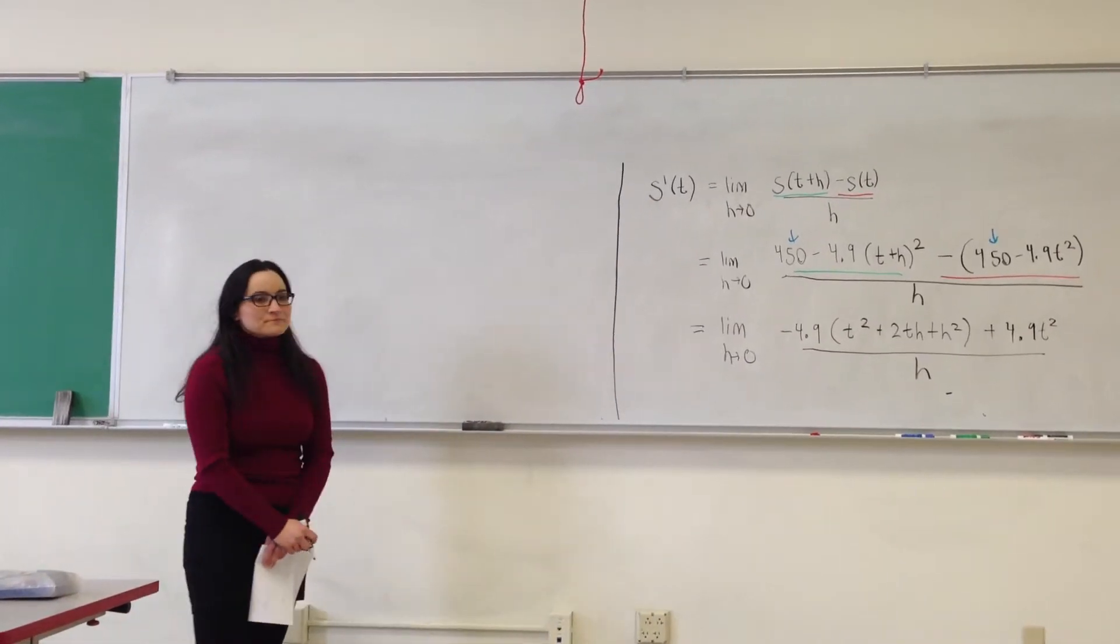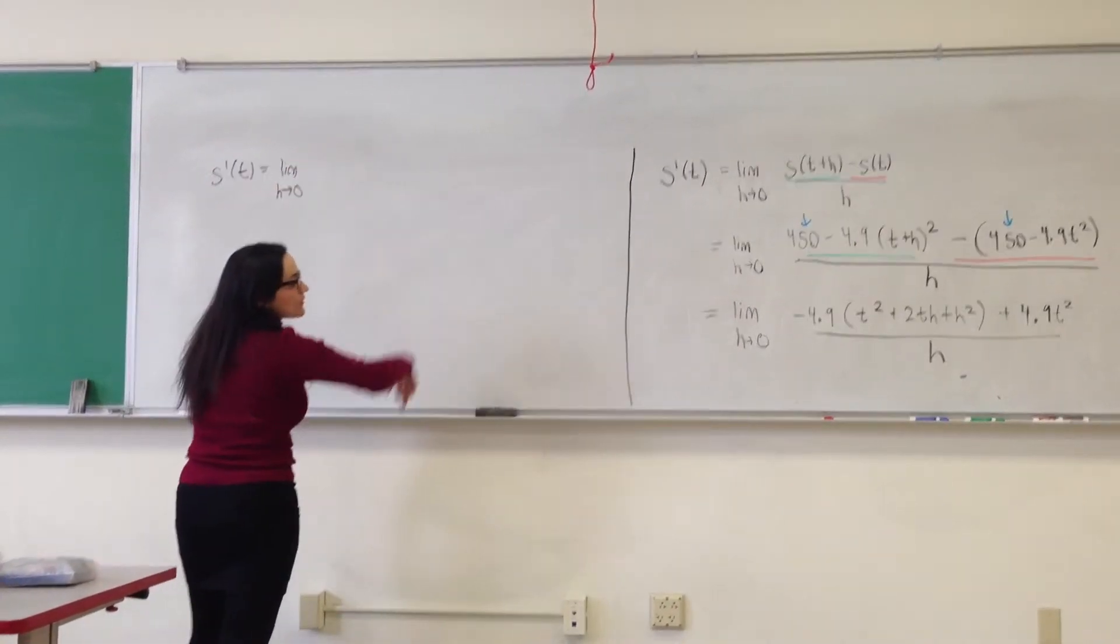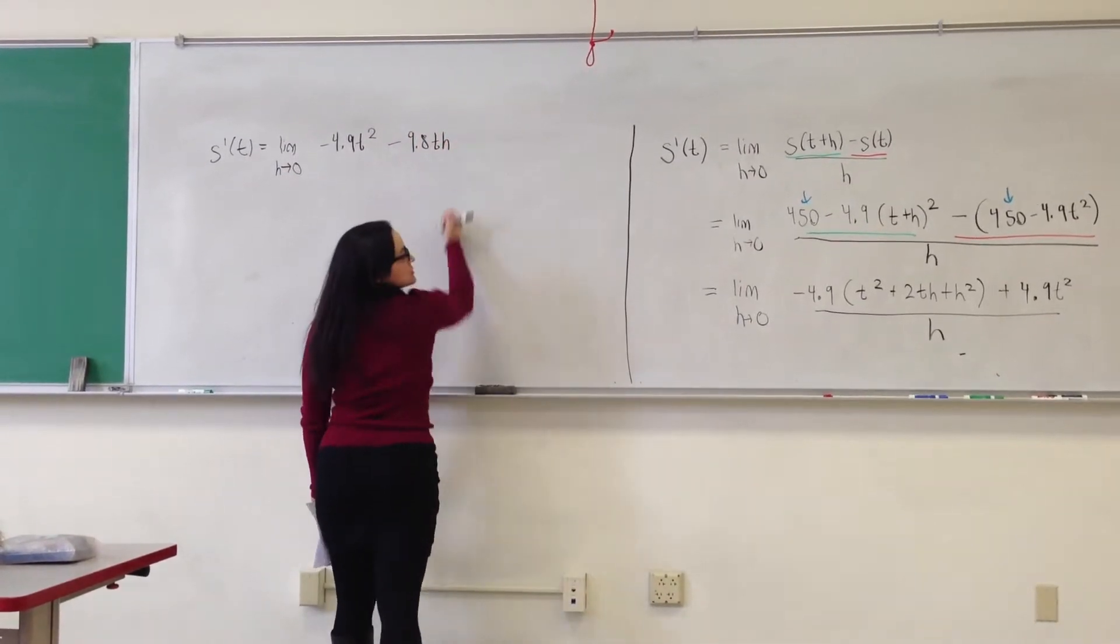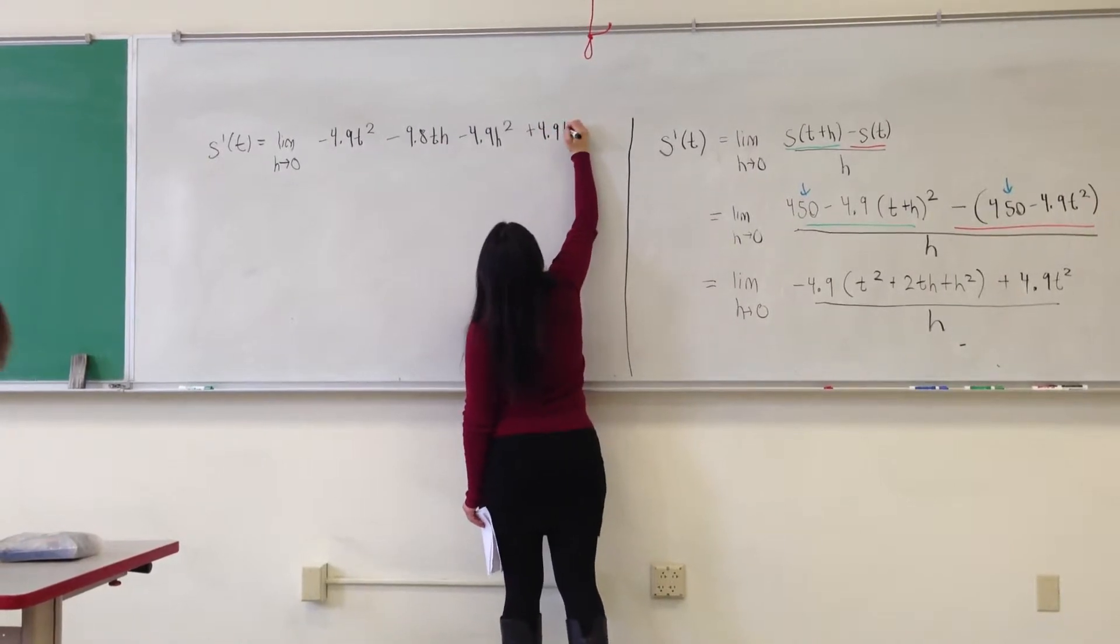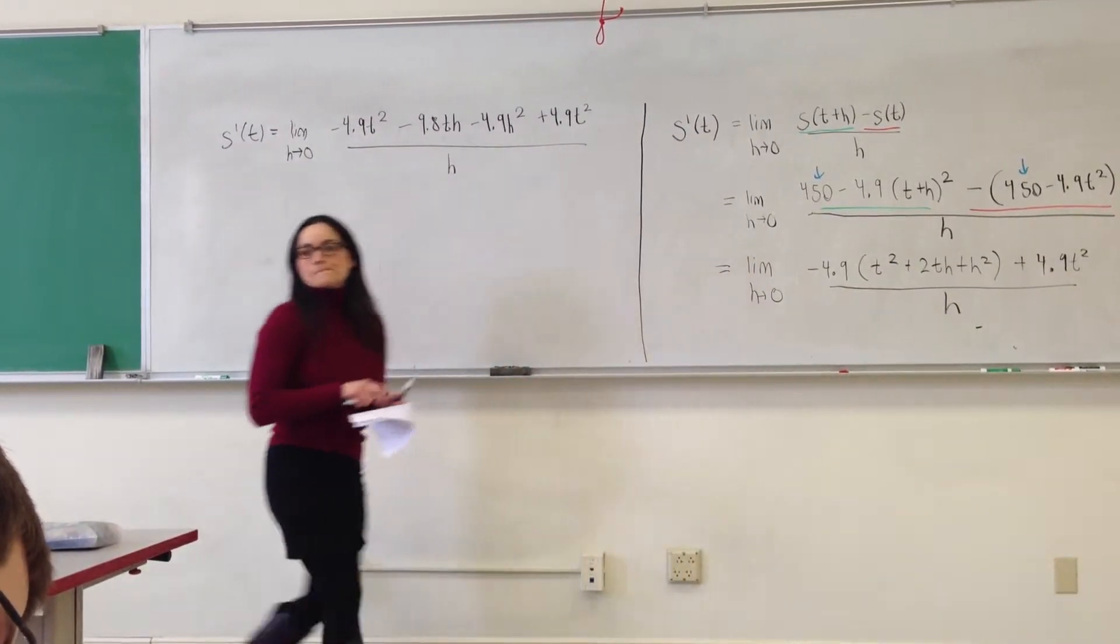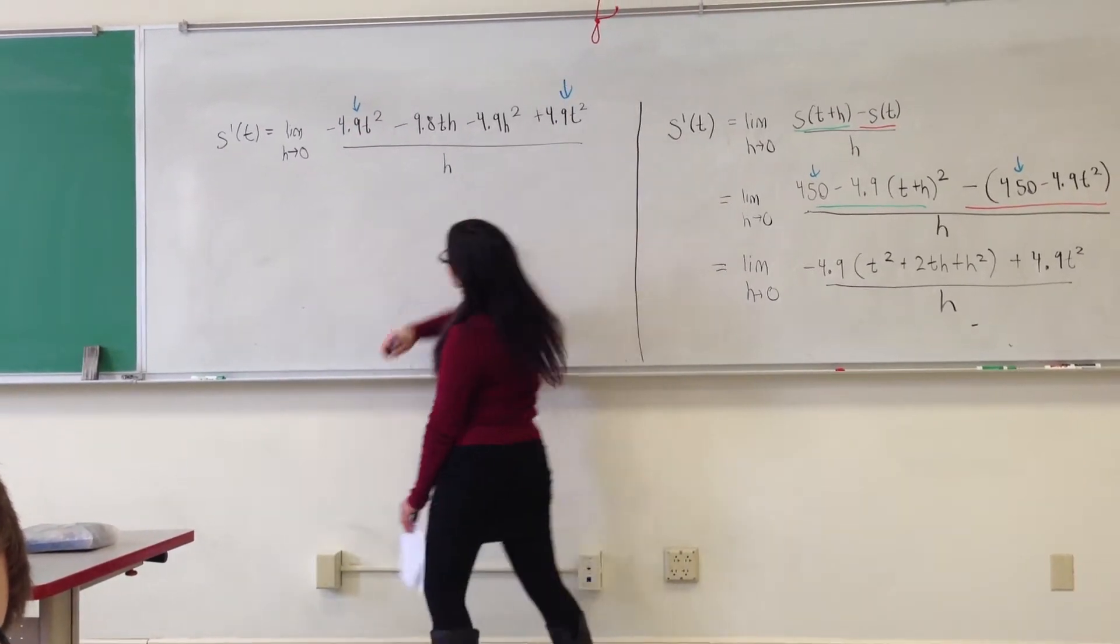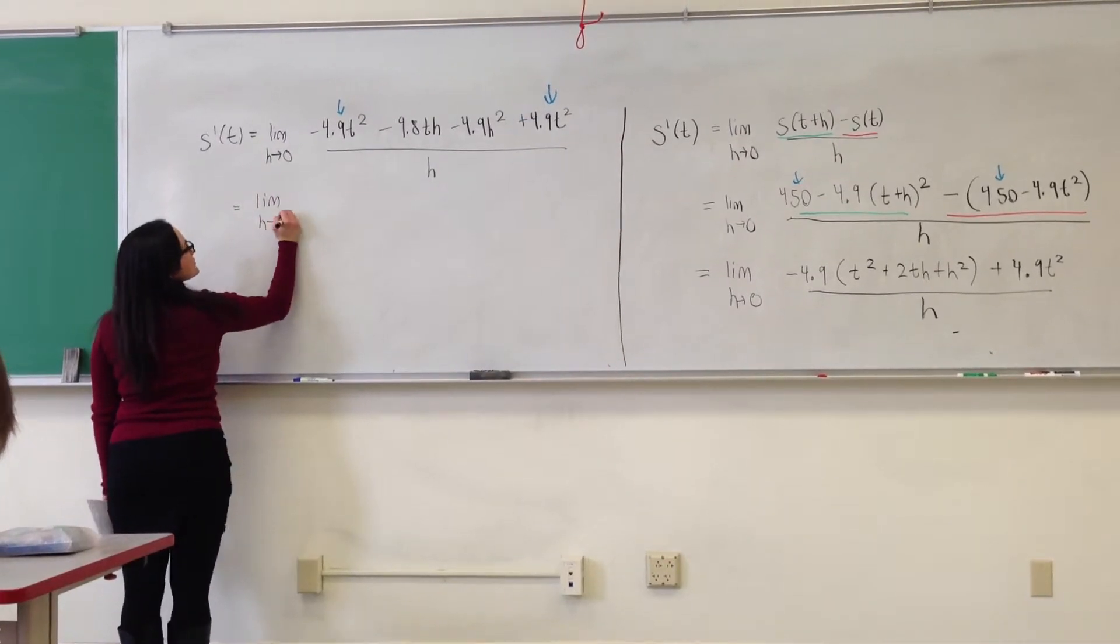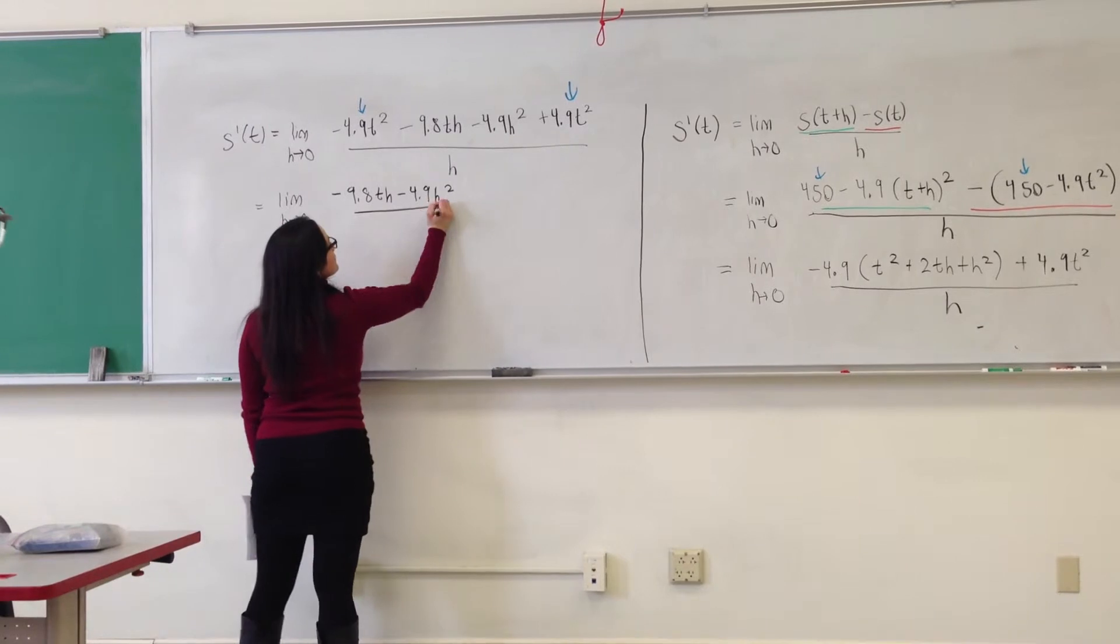Now what? Distribute. So I have s prime of t is the limit as h approaches zero. Distribute. I have negative 4.9 t squared minus 9.8 t h minus 4.9 h squared plus 4.9 t squared divided by h. And now this t squared term and this t squared term, I have opposite signs. These guys are going to cancel. So this is the limit as h approaches zero, negative 9.8 t h minus 4.9 h squared divided by h.